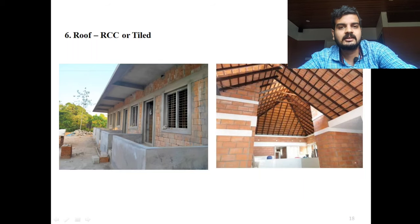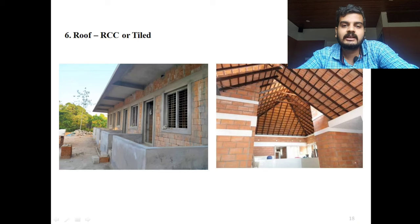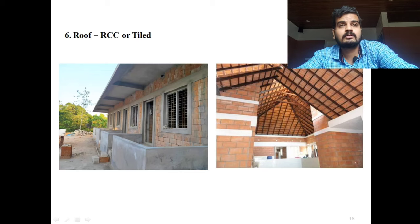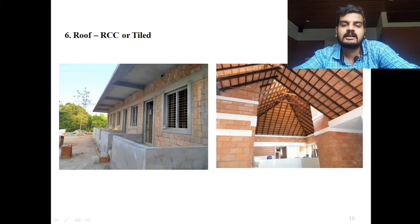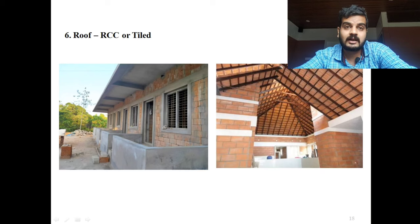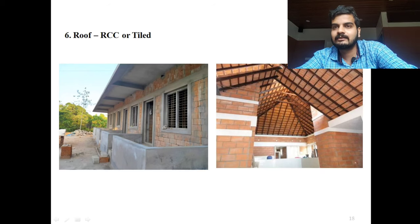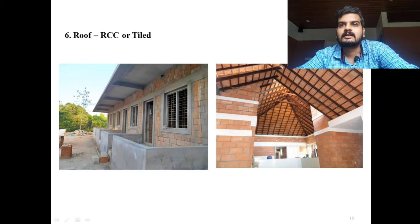For the roof, you can give any type as per conventional practice. An RCC slab can be given, or a tile roof. In the left side picture you can see an RCC slab with a cantilever beam, and on the right side you can also see an RCC slab given.